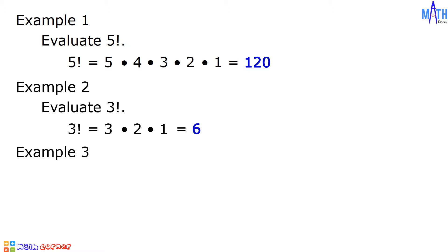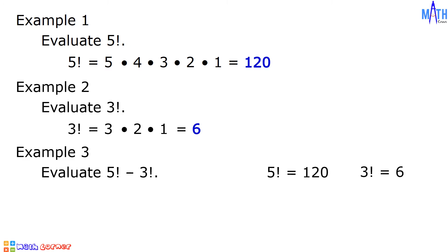Example number 3: evaluate 5 factorial minus 3 factorial. To answer this, we need to evaluate 5 factorial and 3 factorial. 5 factorial is equal to 120 and 3 factorial is equal to 6. Therefore, 5 factorial minus 3 factorial is equal to 120 minus 6, which is equal to 114.